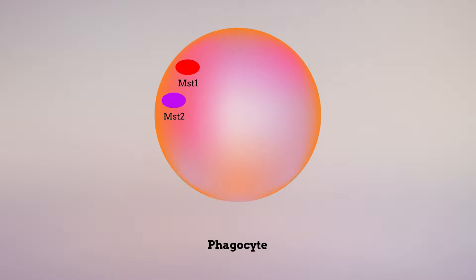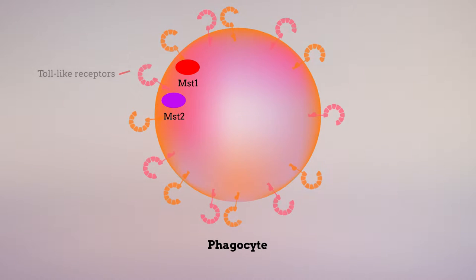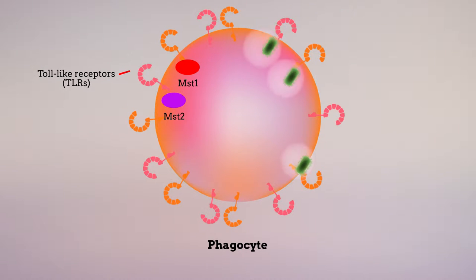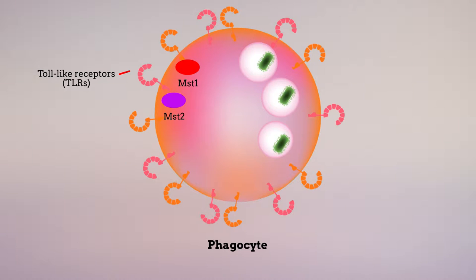Phagocytes detect bacteria using toll-like receptors, or TLRs, which recognize molecular patterns that are unique to invading pathogens. Once confined within phagosomes, the bacteria are killed by phagocytes using ROS from two sources: phagosomes and mitochondria.